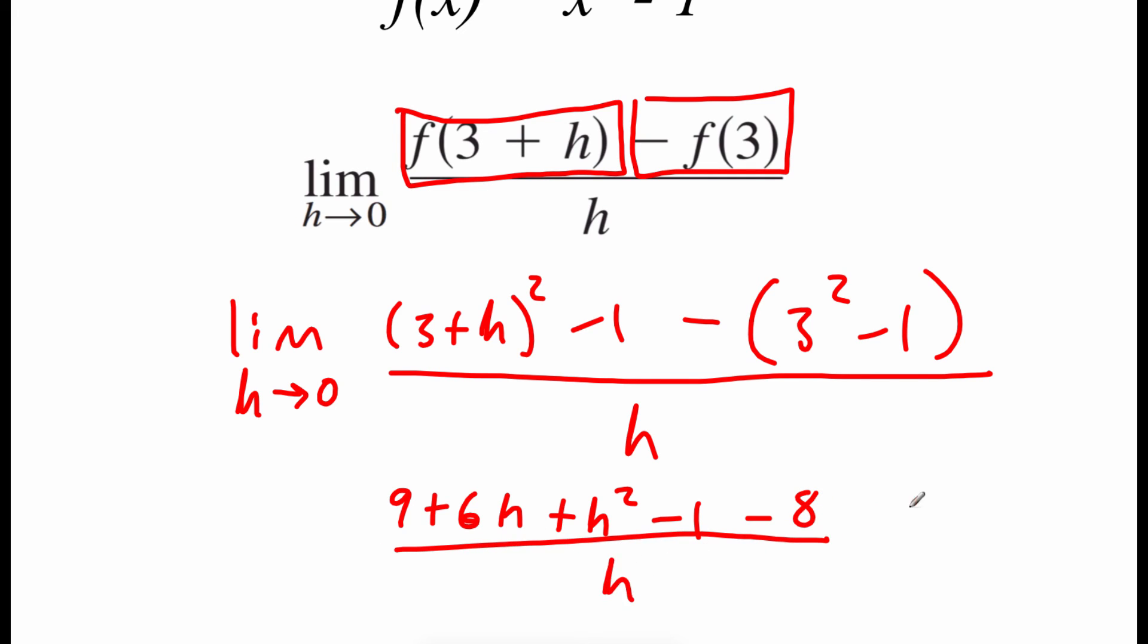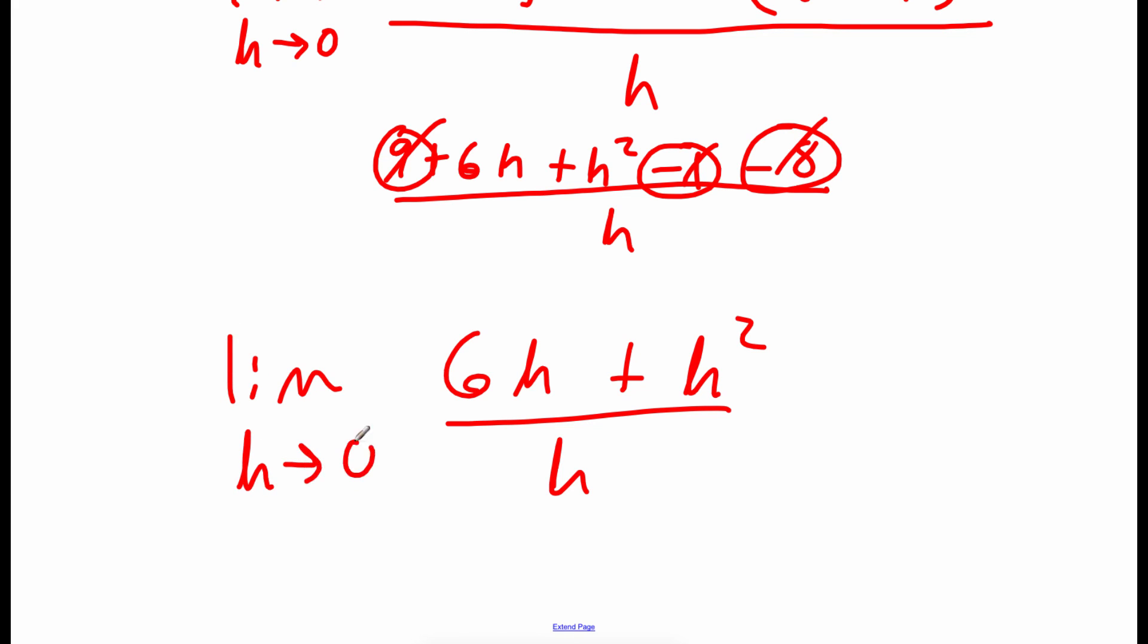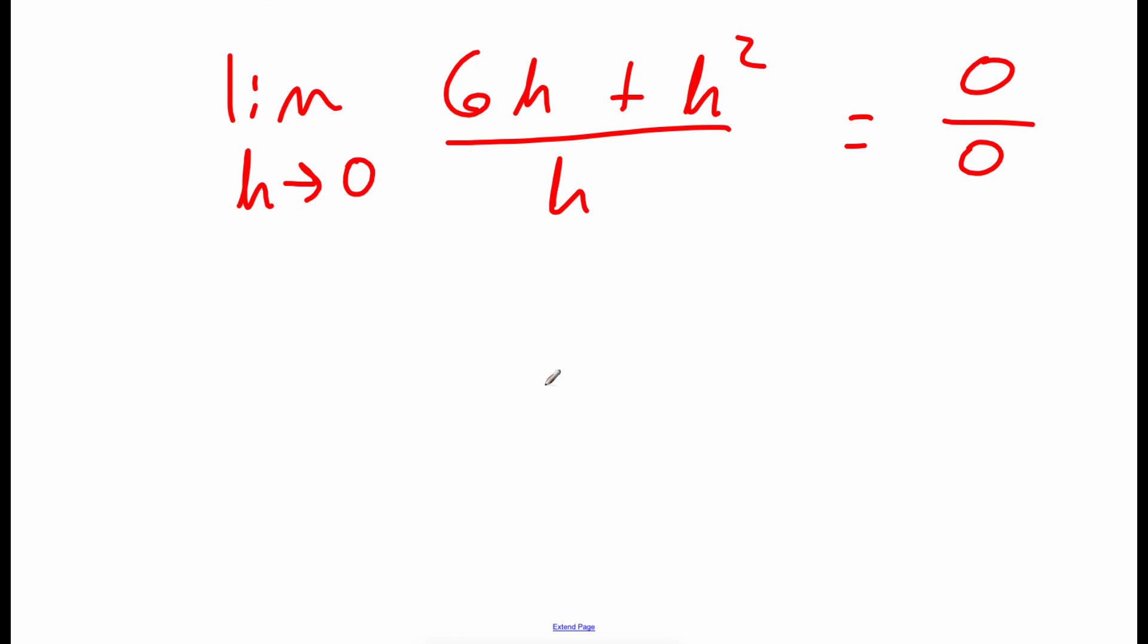And then this is all still over h. And there's even more simplifying that we can do. If we combine like terms on top, out front we've got a 9, and then we've got a minus 1 and a minus 8. So all of that stuff is going to cancel out. So we've got 6h plus h squared all over h. And we're still looking at this limit as h approaches 0. If we were to try to plug 0 into this, we would get that 0 over 0 indeterminate form. So I'm going to do a little dividing out. And on top I want to factor out an h. So we've got 6 plus h left over, and that's all over h. So those things cancel out. So now we've got this limit as h approaches 0 of 6 plus h. And now if we do direct substitution, we end up with 6 as our answer.